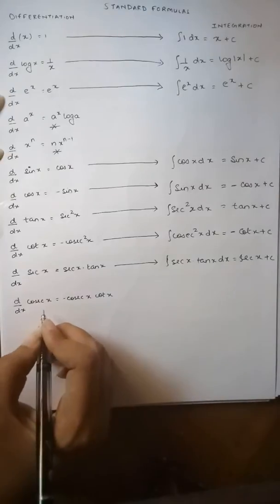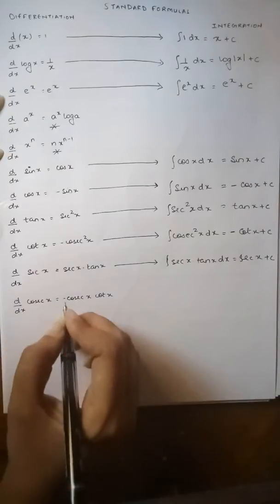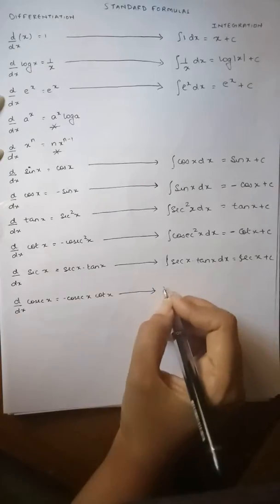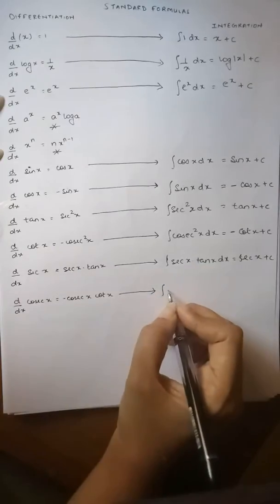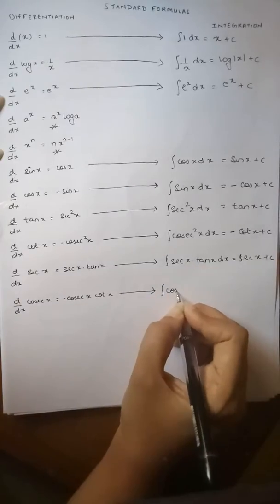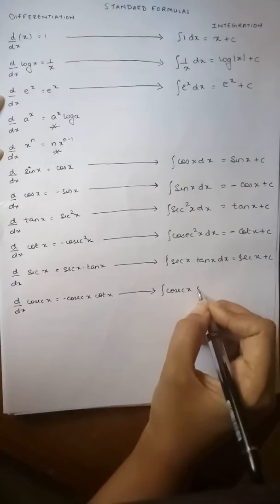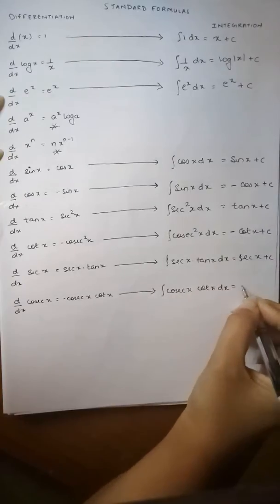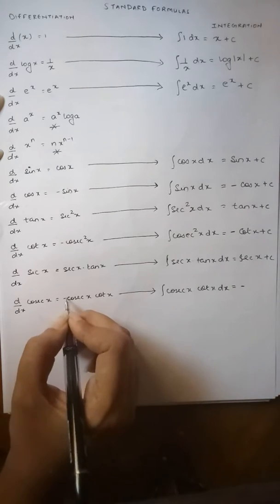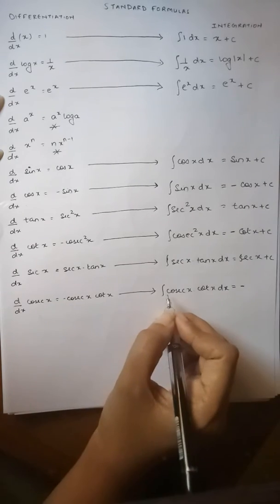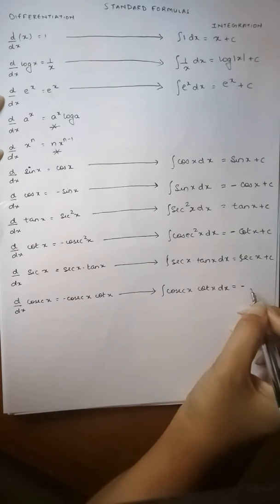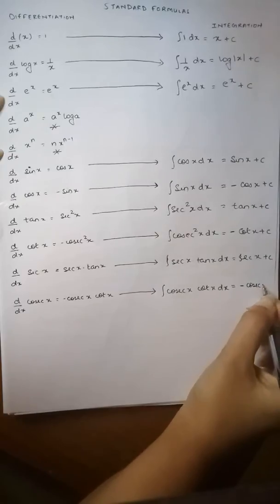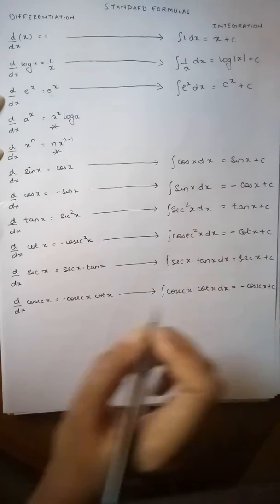Differentiation of cosec x with respect to x gives us minus cosec x into cot x. Therefore integration of cosec x into cot x with respect to x: the minus sign was not taken in my question, so I am adjusting the minus sign in my answer, giving minus cosec x plus c.